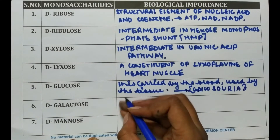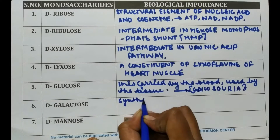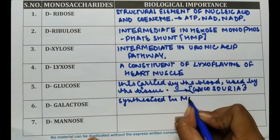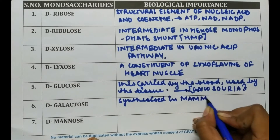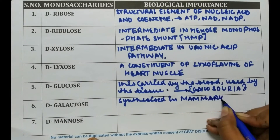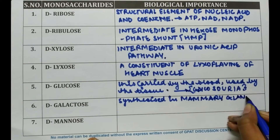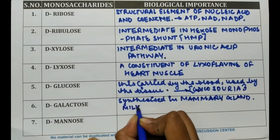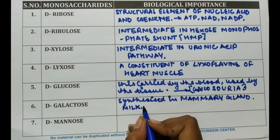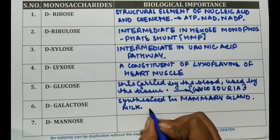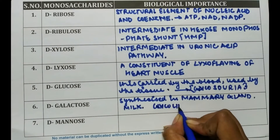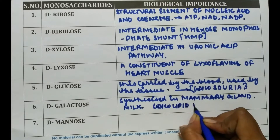D-galactose is synthesized in the mammary gland and is used to make milk. It also constitutes glycolipids and glycoproteins.